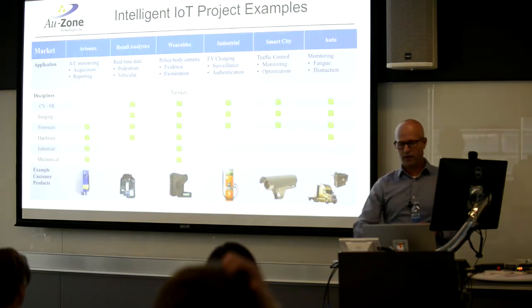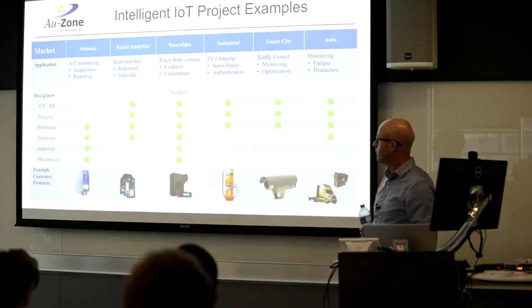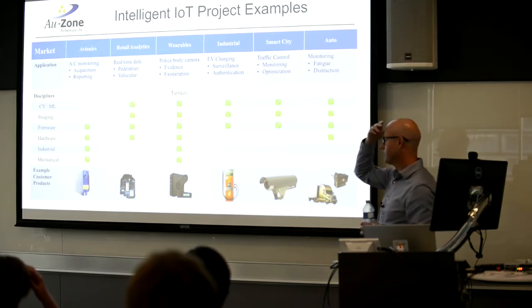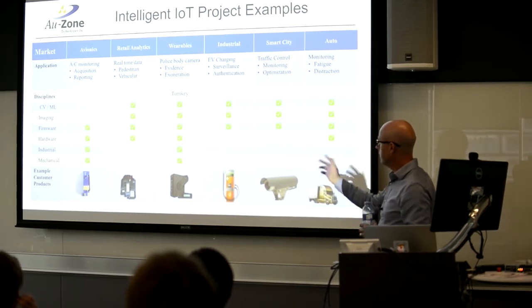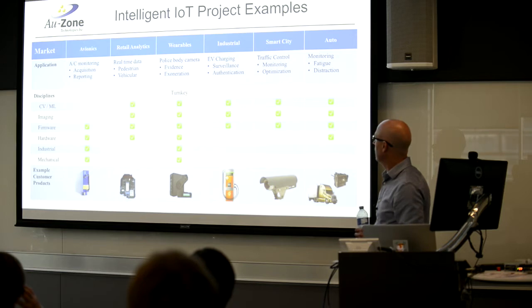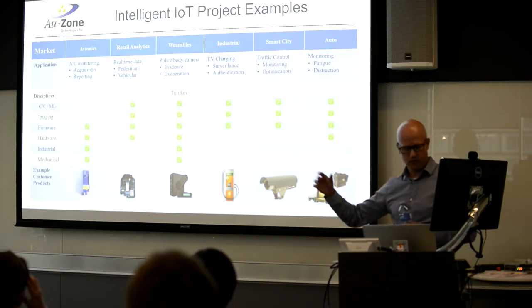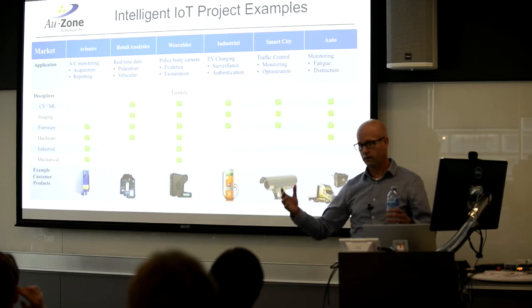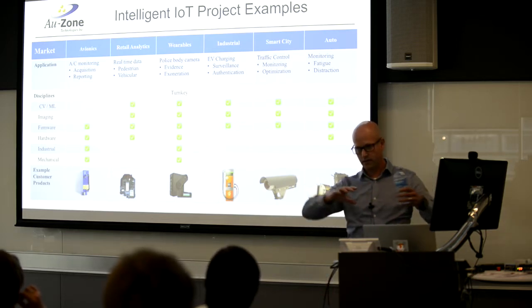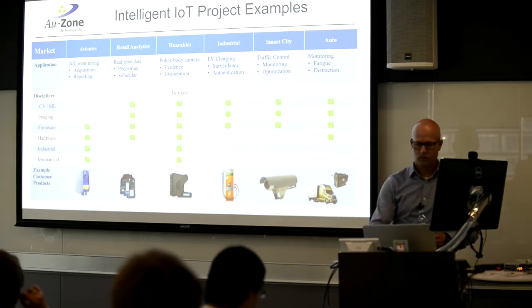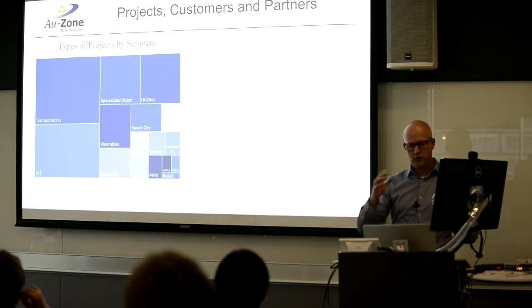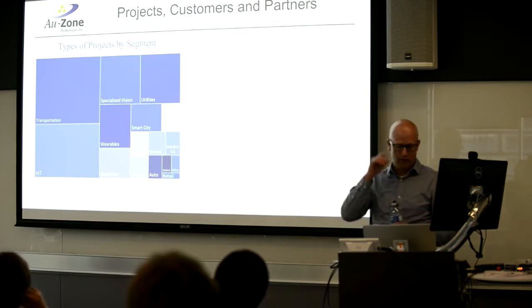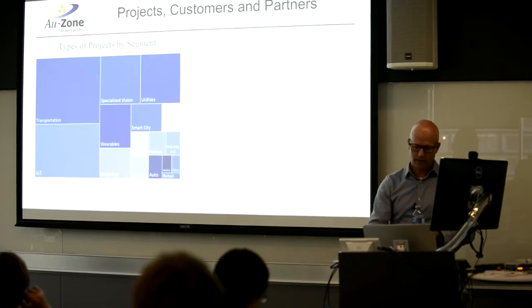Here's a handful of examples of projects we've done over the years with Ozone — the types of products and markets we've worked in. Everything from avionics, retail analytics, wearable devices, industrial applications, electric vehicle charging equipment, smart city applications, and auto. Some of these have AI or ML capability; they don't all, but they all are considered IoT. The space we work in is IoT and ML, and it covers a broad range of applications.